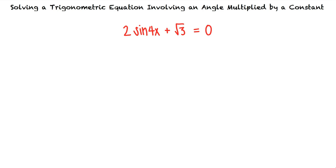We do, but first we have to subtract square root 3 from both sides and divide both sides by 2. Now we have sine 4x equals negative square root 3 over 2.